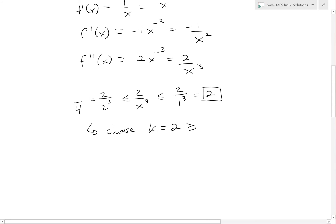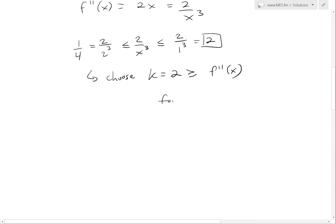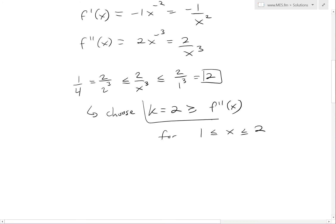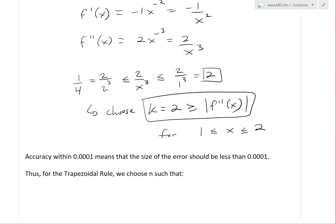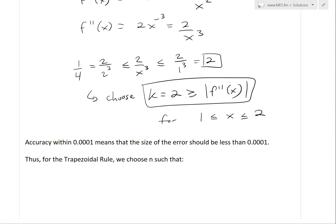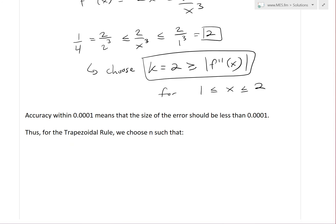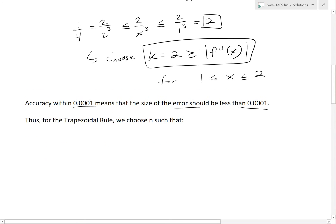This follows that k=2 is greater than or equal to |f''(x)| for the interval 1 ≤ x ≤ 2. Choosing the lowest value of k that we can gives better accuracy. If you put infinity, that just means our error is less than infinity, which doesn't mean much.